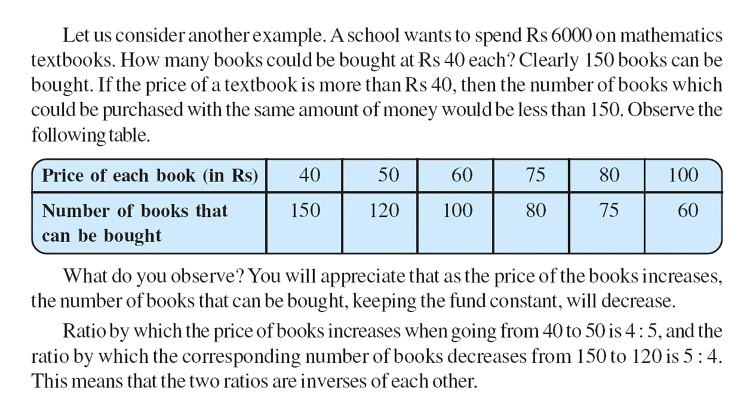So we will take one more example. For example, a school wanted to spend this much amount 6,000 on mathematics books. How many books could be bought at rupees 40 each? 150 books can be bought. Because this is 6,000 and when you divide 6,000 by 40, you get 150. If the price of the book is more than 40, then the number of books could be purchased in the same amount of money would be less than 150. This is obvious. So if the price of book is 40, you get 150. If the price of book is 50, now you divide 6,000 by 50, you get 120.